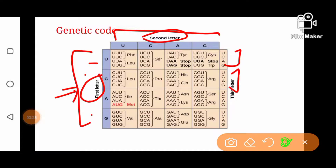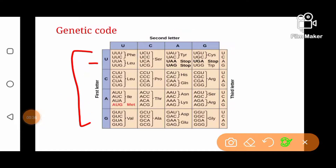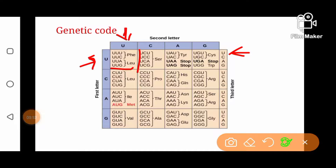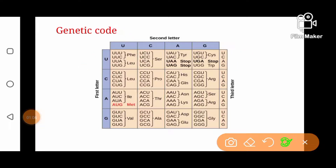Left hand side pe hum yeh charon nucleotides 4 times likhtay hain, yaani har cell ke samnay yeh charon nucleotides hum likhtay hain. Ab yeh different combinations kaise bante hain? Hum left hand side se start kertay hain, yahan se hum uracil letay hain, phir yahan se uracil, aur yahan se yeh charon nucleotides hum bari bari letay hain. Yaani is cell mein jitne bhi genetic codes bante hain, un sab mein pehla aur doosra letter common hoga aur yeh teesra letter variable hoga — isi tarah U-U-U, then U-U-C, then U-U-A, phir U-U-G.